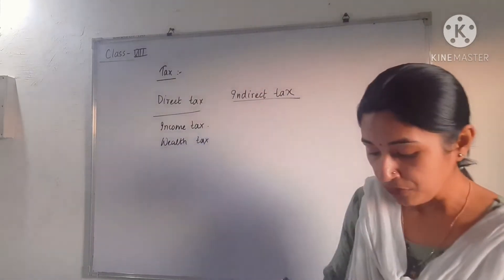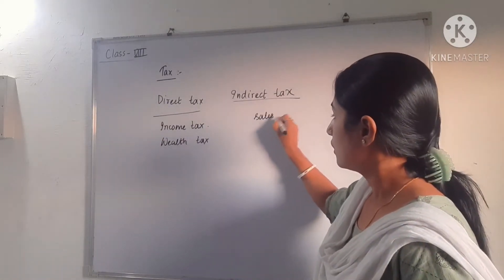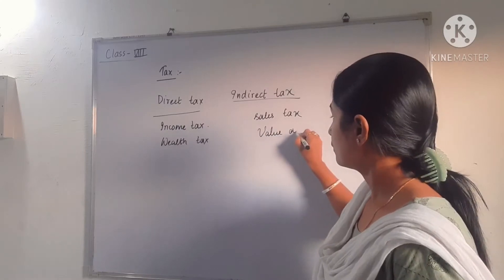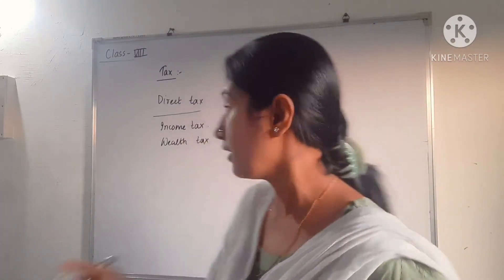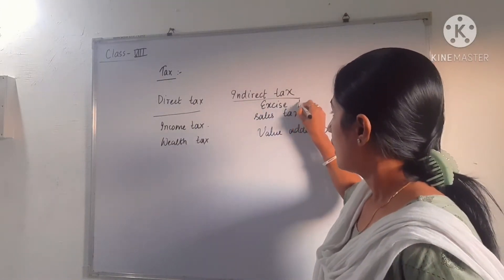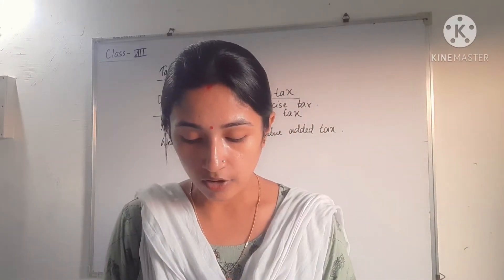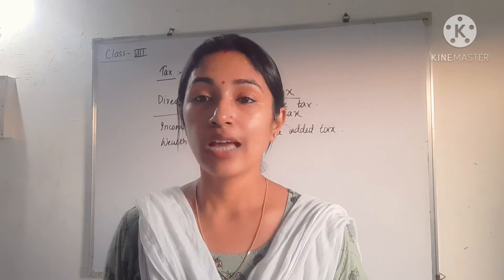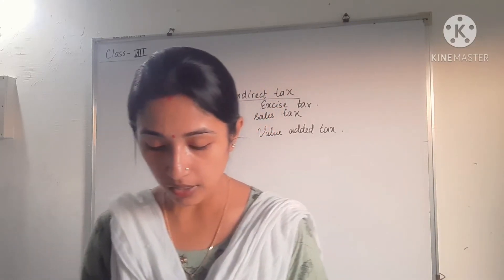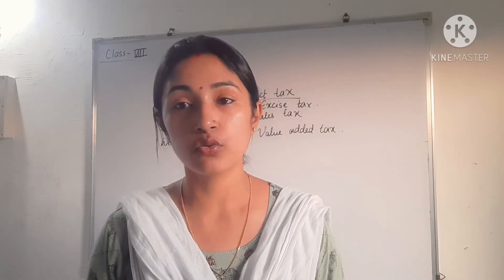For indirect tax, we have excise tax, sales tax, and value added tax. Excise tax is the tax levied on items which are manufactured in the country. For example, cigarettes and alcohol have very high excise tax because they are manufactured in our country, and for that we have to pay a larger amount of tax to the central government.